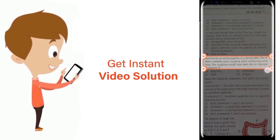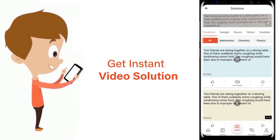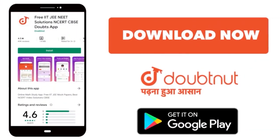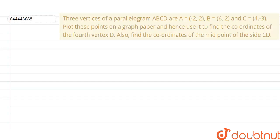In this question we have three vertices of a parallelogram A, B, C and we have to find the vertex D by plotting them on a graph. We also have to find the midpoint of the line segment CD.